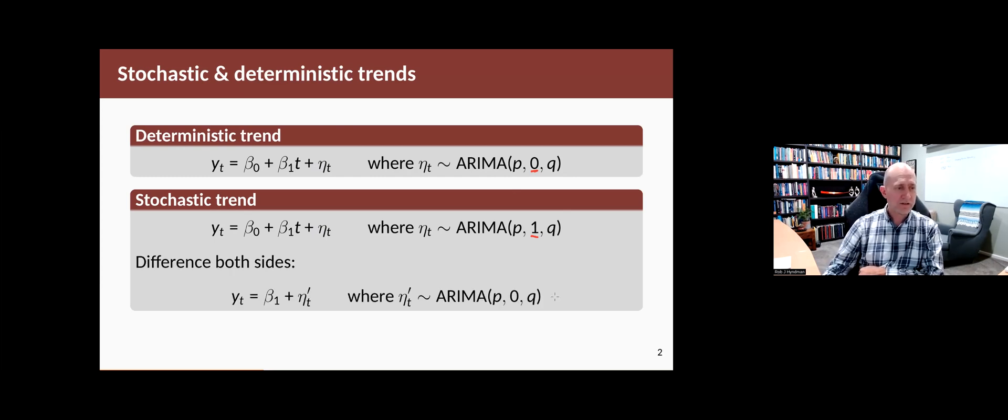If we difference both sides of this second equation, you'll see that beta zero disappears, has no effect at all, and the slope of the line becomes a constant. So yt equals beta one plus the difference of et, and that is a stationary process. That helps us understand a little bit about what's going on here.